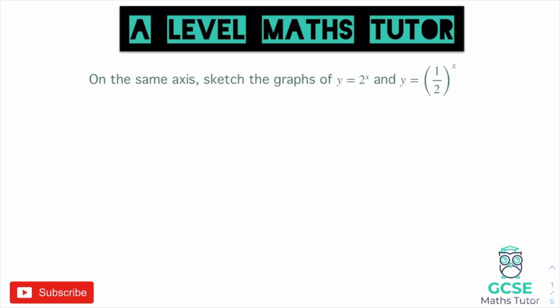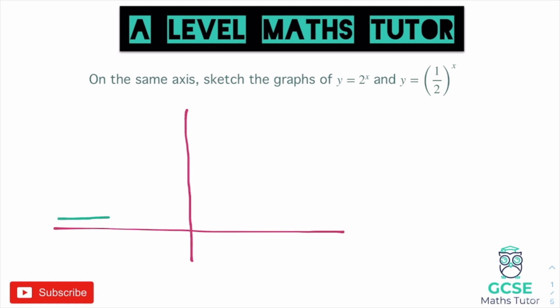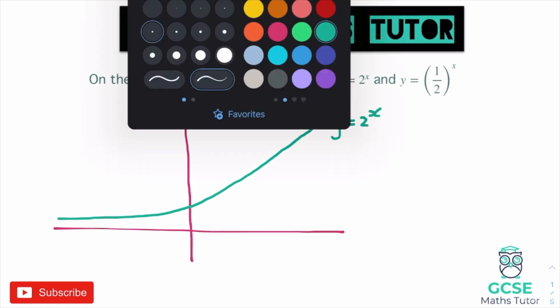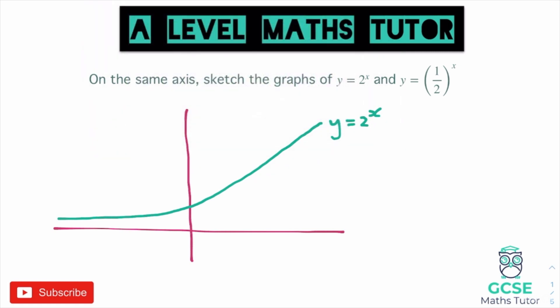When having a look at exponential graphs, it's important that we're able to sketch them. This question says: on the same axis, sketch the graphs of y equals 2 to the power of x, and y equals a half to the power of x. Drawing some axes, for the first one we sketch y equals 2 to the power of x — this is an increasing function, so it slopes upwards.